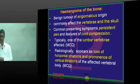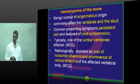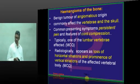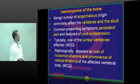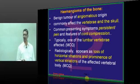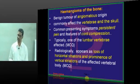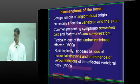Hemangioma of the bone is a developmental disorder — a benign tumor of vascular origin. It will present with persisting pain or compression, because most of the time it occurs in the vertebra, which may lead to neurological compression.